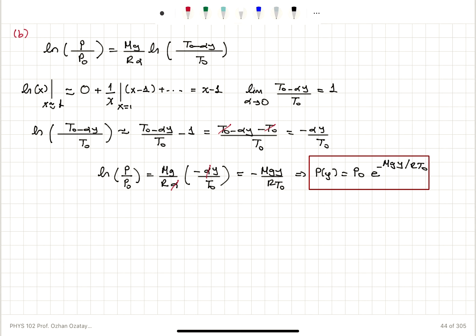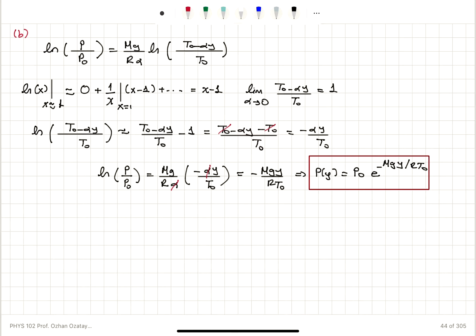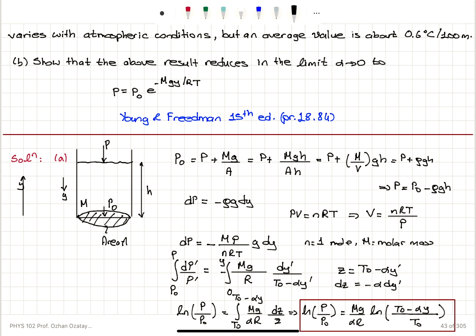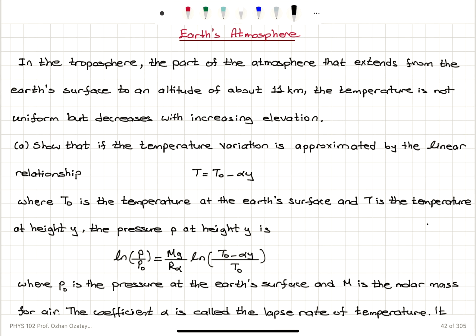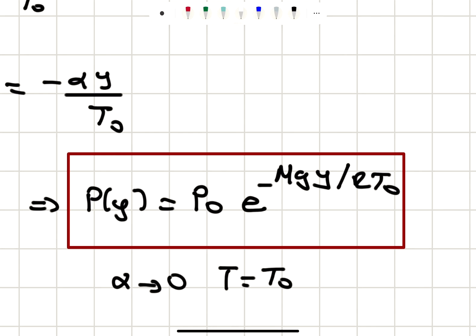As α → 0, T = T₀ − αy becomes T₀, so T₀ and T are the same thing when α approaches 0. I can therefore replace T₀ with temperature T in the final expression.